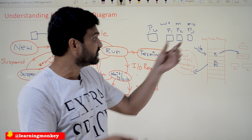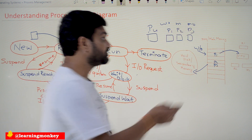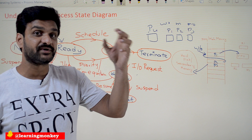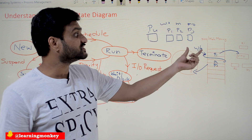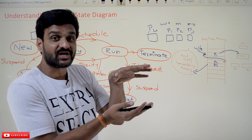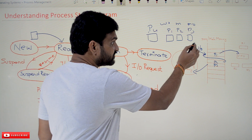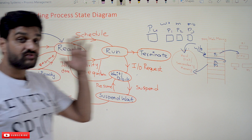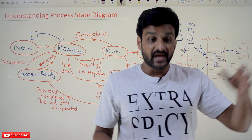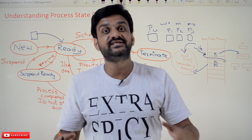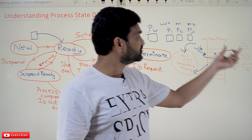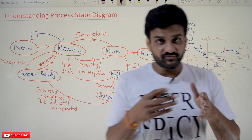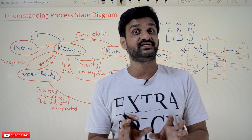If the wait or block state is filled with all processes and one more process — for example P2 — is requesting an IO operation but there is no space in the wait or block state, then the process waiting for the longest period of time will get shifted onto the hard disk, which is the suspend wait state. All these processes must be managed, and that management is done by the operating system. Shifting processes from CPU to ready state, ready to suspend ready, suspend ready to suspend wait — all of this is one of the functionalities of the operating system.